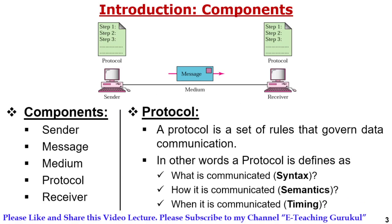The different components are: sender, message, medium, protocols, and receiver. A protocol is a set of rules that govern data communications. The protocol defines: what is communicated — that is the syntax; how it is communicated — that is the semantics, meaning the meaning of the message; and when it is communicated — that is timing, meaning the sender and receiver must be ready before data is sent.